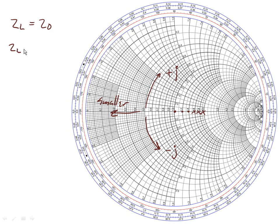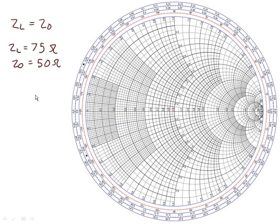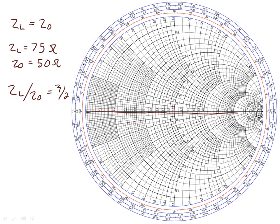Let's say Z_load is equal to 75 ohms and Z_0 is equal to 50 ohms, and let's plot this on our Smith chart. How would we plot this load impedance? Well, Z_load over Z_0 equals 75 over 50, or 3 over 2, which is 1.5. Since it's purely real, we plot it on the real axis — this horizontal axis right here — at a value of 1.5, which turns out to be right here.